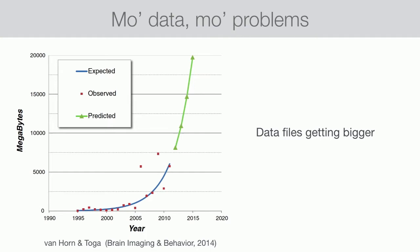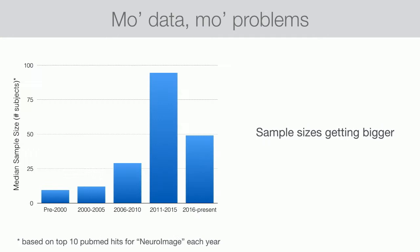As we increase our spatial and temporal resolution of the technique, and add things like multiband imaging — which allows you to collect multiple images at the same time — our data set sizes are just getting physically bigger. And our sample sizes are also getting bigger. A quick search through PubMed looking at the top 10 fMRI studies in the journal NeuroImage across the last 20 years shows that before 2000, you were getting about 8 to 12 subjects per study, and in the early 2000s the average was about 12 to 16.